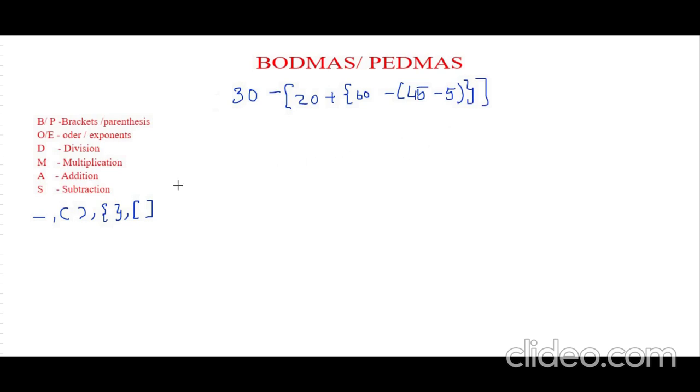In this question we don't have a bar bracket, so we will directly go to the curve bracket. So inside the curve bracket we have 45 minus 5. So let's solve that first.